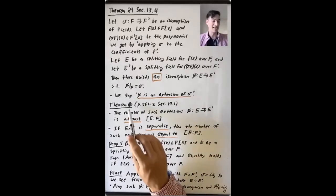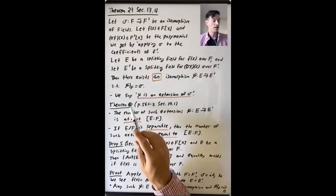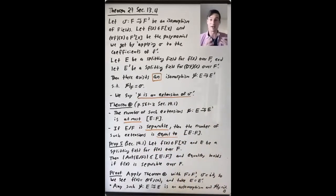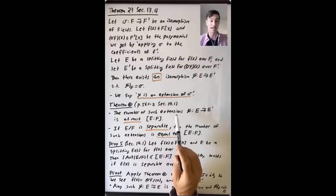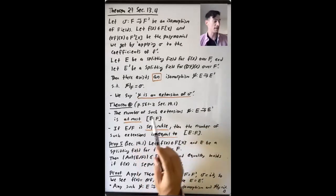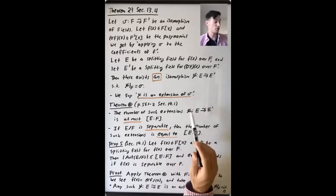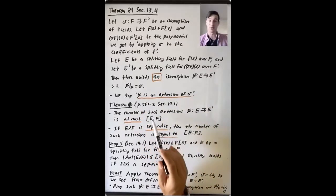So what we want to prove now is a theorem about not just that there exists one isomorphism with this property, but to count them. This theorem is proven on pages 561 to 562 of Section 14.1 of Dummit and Foote. It doesn't get highlighted as its own result, but it's the main thing we're doing right now, so I'll call it Theorem Star.